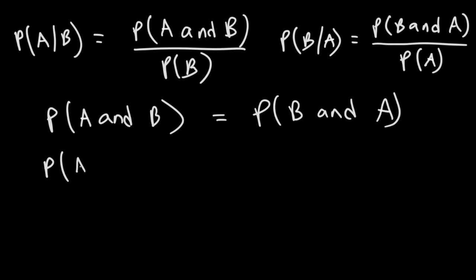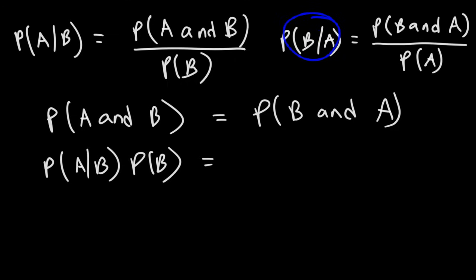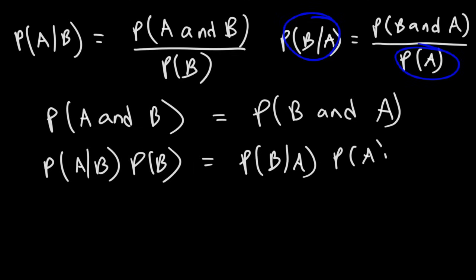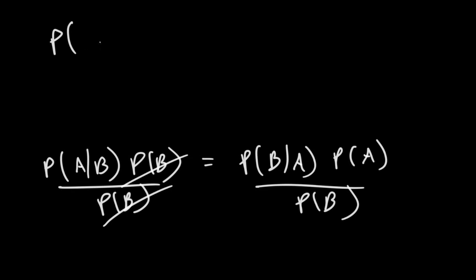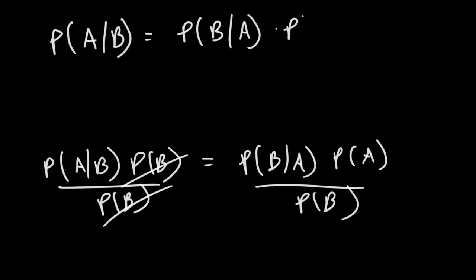So let's replace that on the left side. Now on the right side, the probability of B and A occurring is the product of the probability of B occurring given A has already occurred, times the probability of event A occurring. Now what I'm going to do is divide both sides by the probability that event B will occur. So the probability that A will occur given that B has already occurred is equal to the probability that B will occur given that A has occurred, times the probability of event A occurring, divided by the probability that event B will occur.